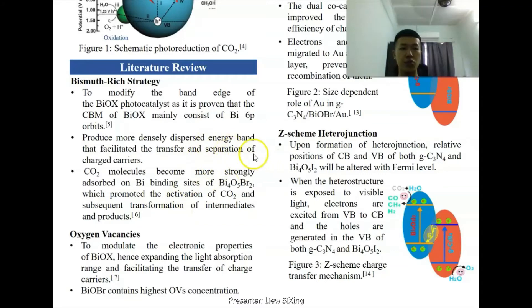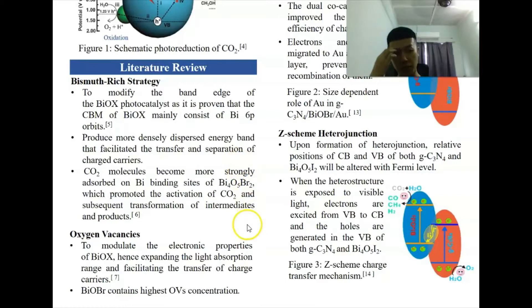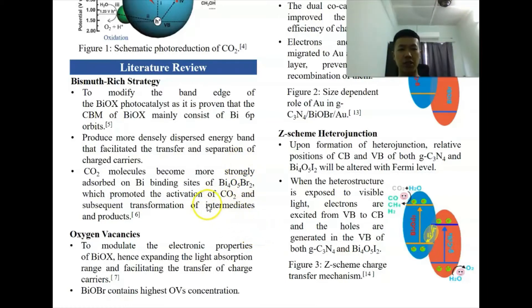The bismuth strategy is used to modify the band structure of BiOX, as their conduction band minimum mainly consists of 6p orbitals. Increasing the bismuth content produces more densely dispersed energy bands that facilitate the transfer and separation of charge carriers. CO2 becomes more strongly adsorbed on bismuth-rich BiOX, which promotes the activation of the molecule and subsequent transformation of intermediates and products.